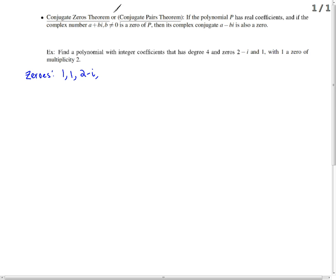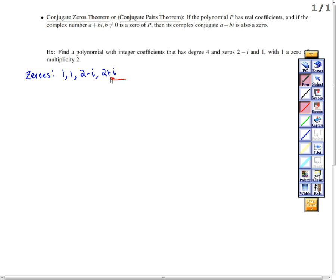This theorem right above, the conjugate zeros theorem, tells me that if 2 minus i is a zero, so is its conjugate. What is the conjugate? 2 plus i. So this is also a zero by the conjugate zeros theorem.